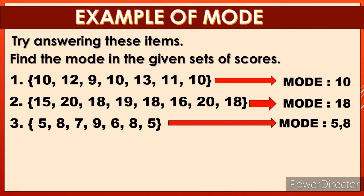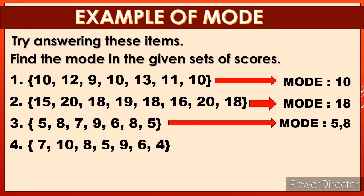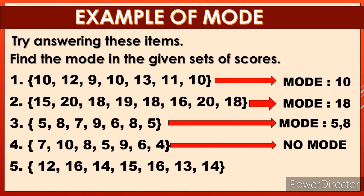Number 4: 7, 10, 8, 5, 9, 6, 4 — the mode is no mode. Number 5: 12, 16, 4, 15, 16, 13, 14 — the mode is 16. Wait, the mode here is fourteen and sixteen.